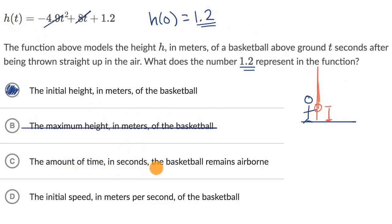The amount of time in seconds the basketball remains airborne. No, that's not the case. Any value that h takes on, remember, h is in meters, t, which is an input into the function, is time. So if you're talking about something that h is equal to, which is in this case h equals 1.2 and t equals zero, you're talking about a height above the ground.